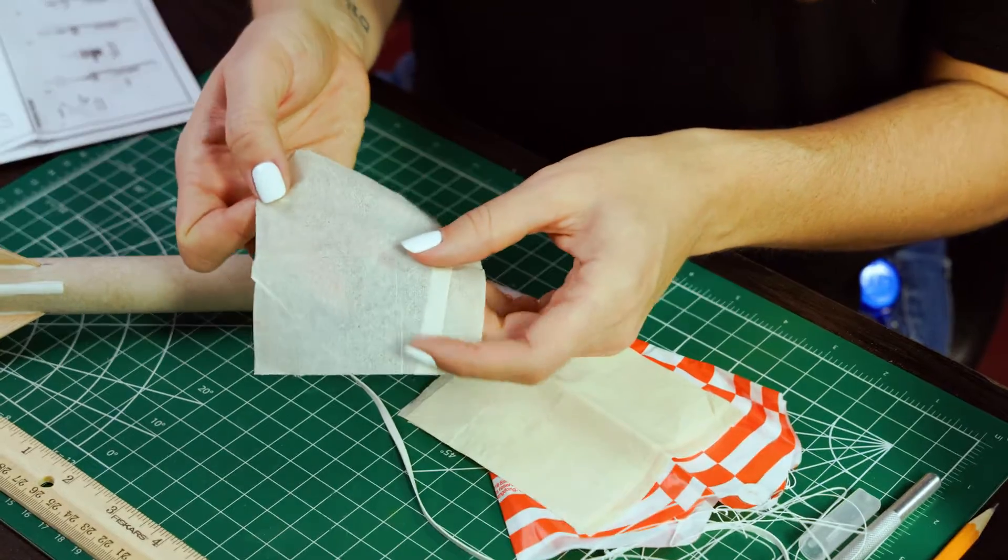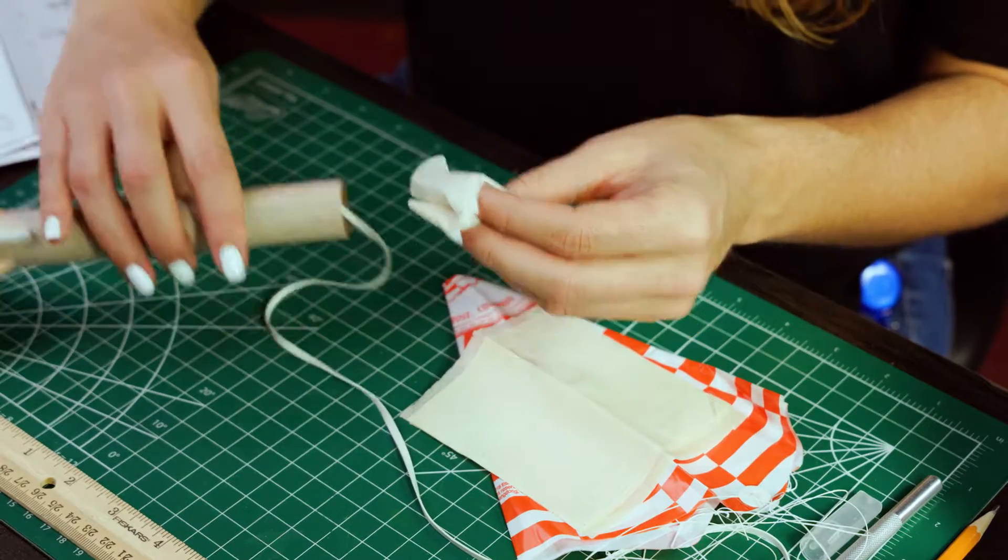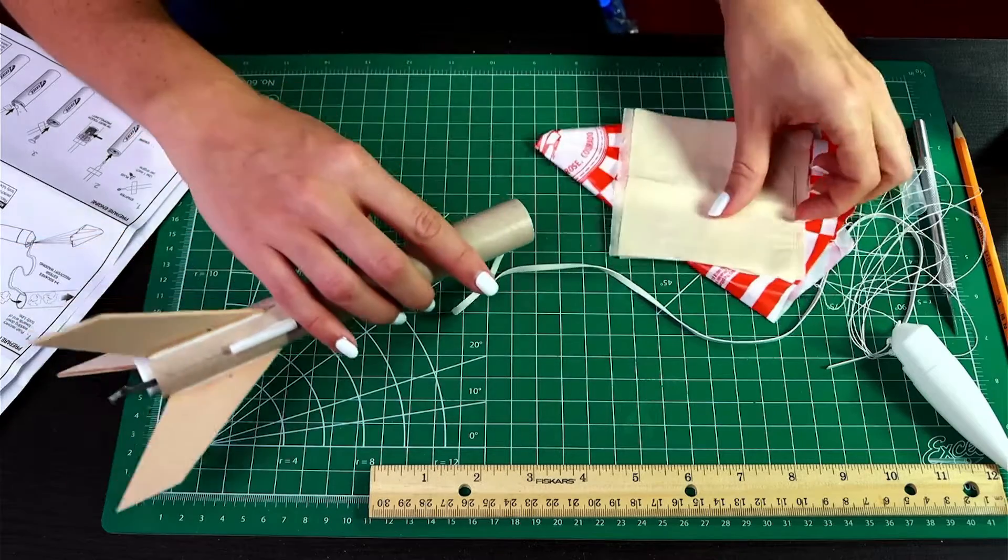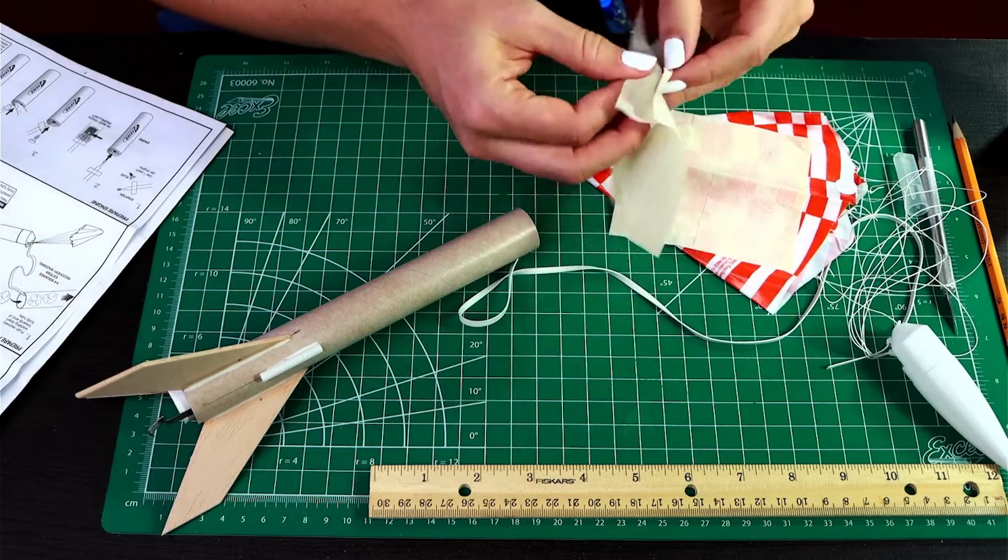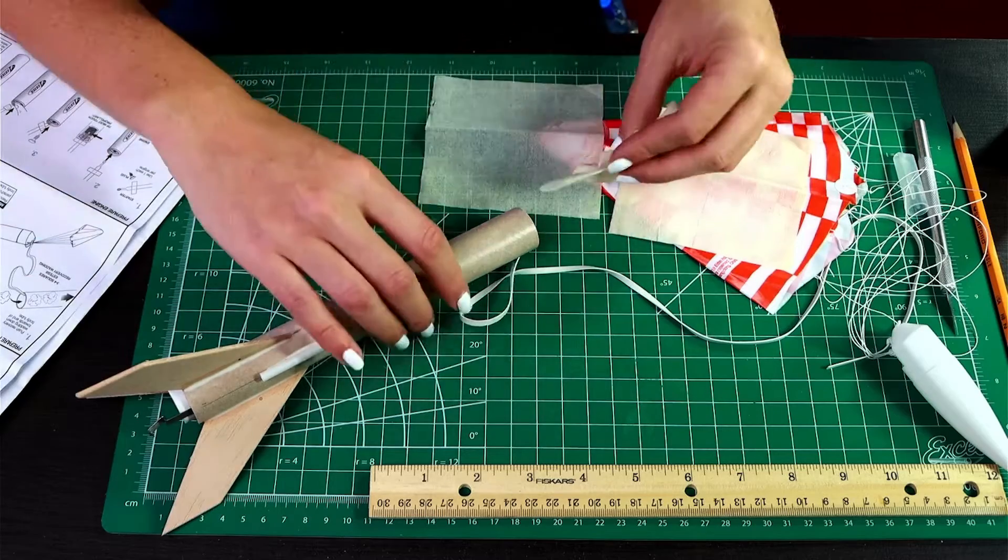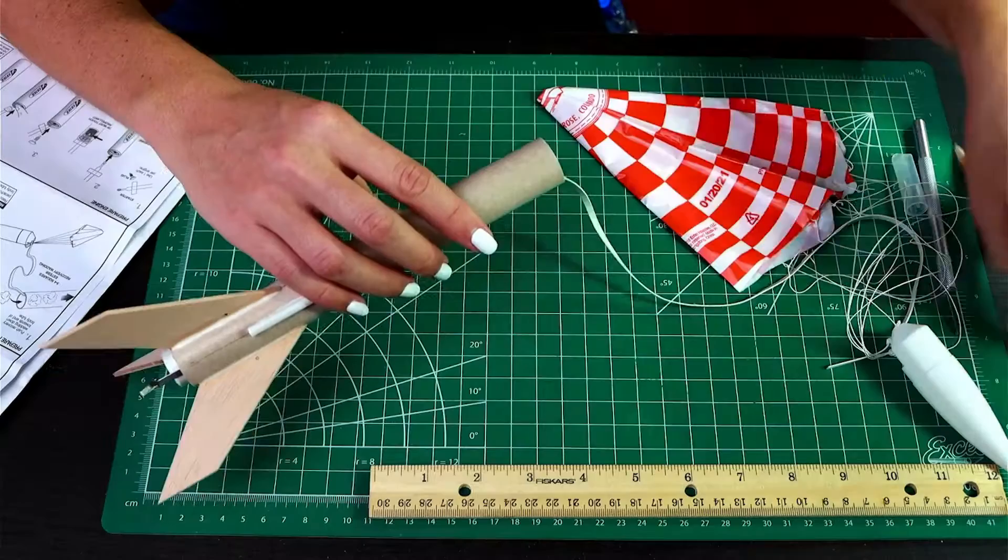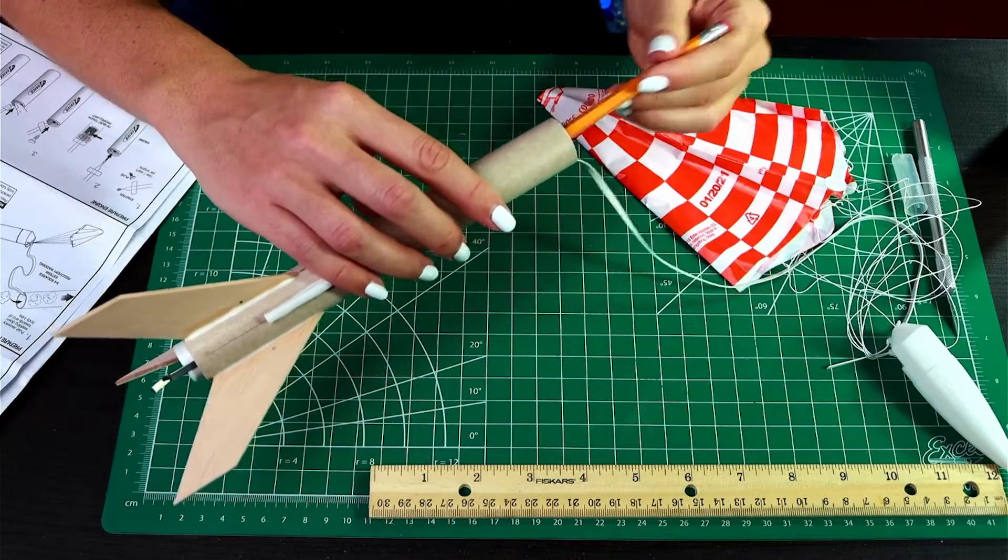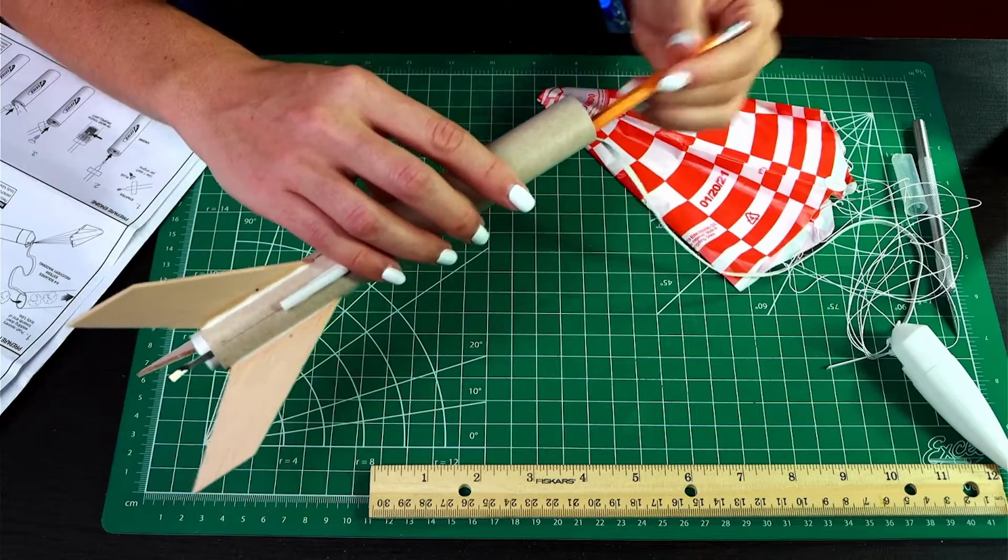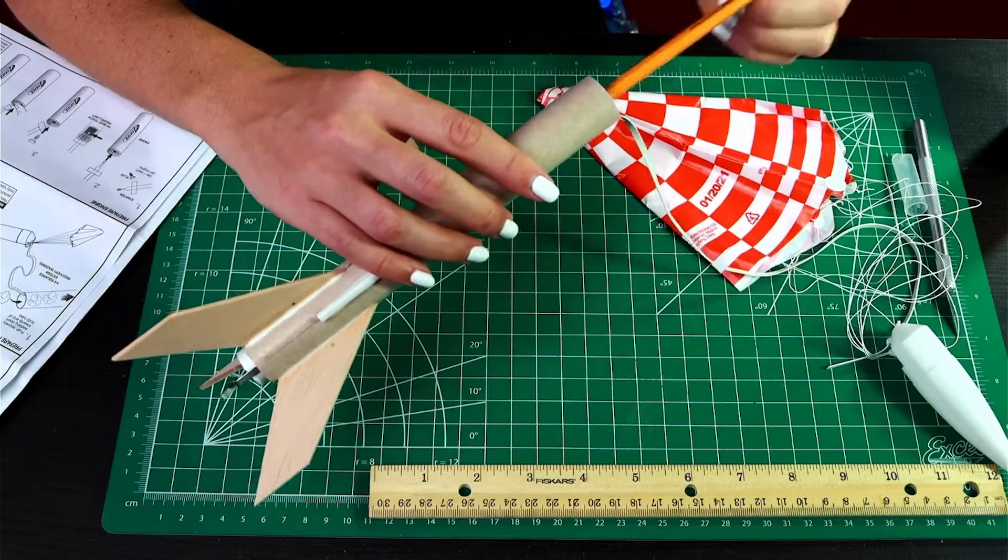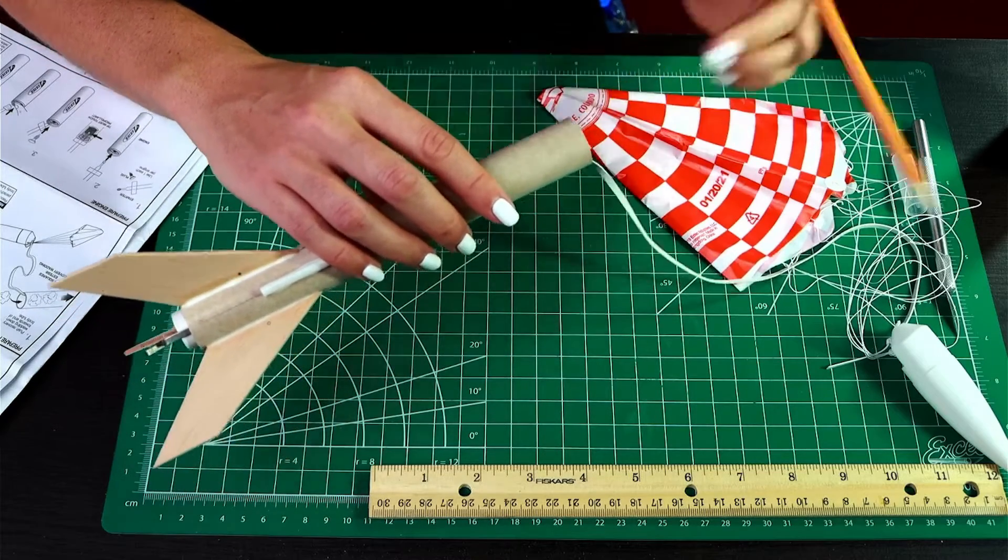And make sure you take them individually, and then crumple them up and put them inside the body tube. Don't crumple them too much. You want them to really take up space in the body tube. And then you can use a pencil or a pen just to push them down. Again, we're not crumpling them too much, but just making room for our parachute up here.